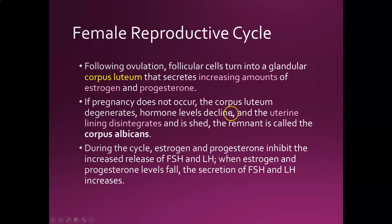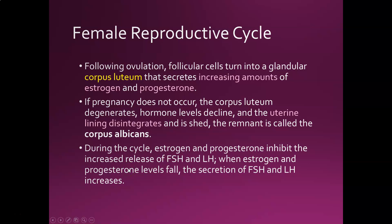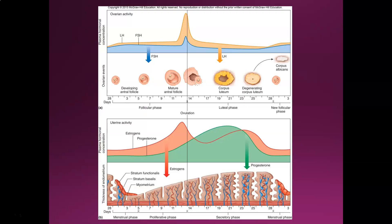When hormone levels decline you often get PMS — the moodiness and symptoms right before your period. Having a good amount of estrogen — not too much — actually makes you feel good and gives you energy. The remnant of the corpus luteum is called the corpus albicans and is inactive. During the cycle, estrogen and progesterone inhibit increased release of LH and FSH. When estrogen and progesterone levels fall, FSH and LH can rise again, starting the whole cycle over and maturing the next follicle.